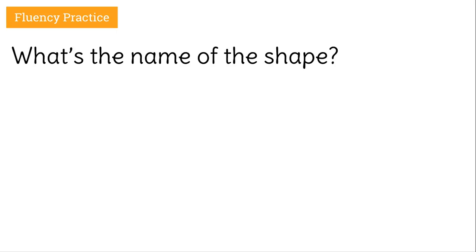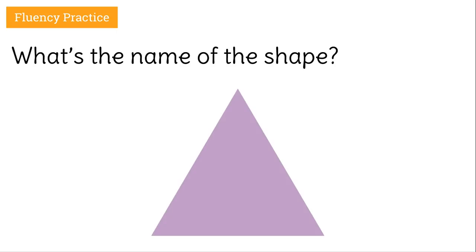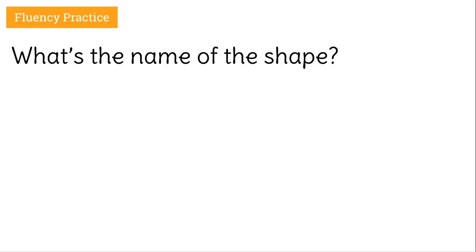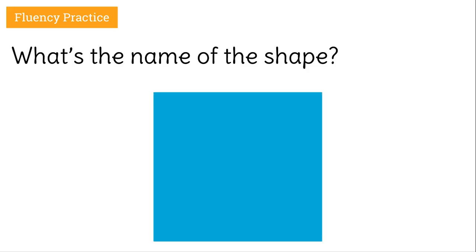Let's start by naming this shape. That's an easy one — it is a triangle. Let's try another one. That's another easy one. This is a square.